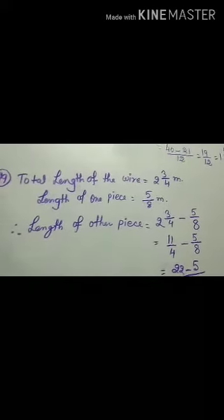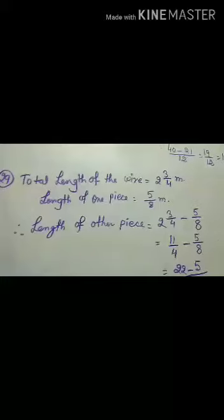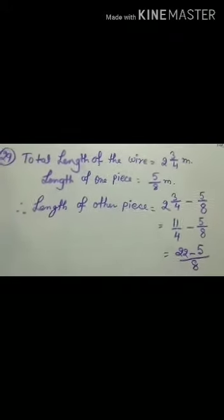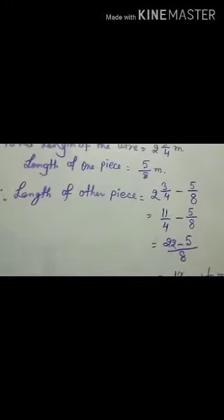The total wire is 2 and 3 by 4, and one piece is 5 by 8. So, the other piece is 2 and 3 by 4 minus 5 by 8.